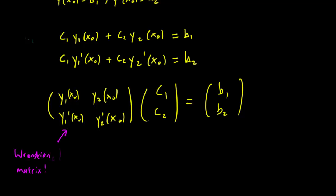This is exactly the Wronskian matrix. So the question is, can we find c1 and c2 if we have these initial conditions?